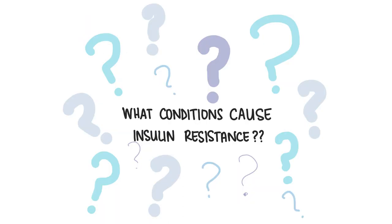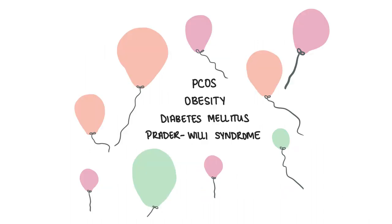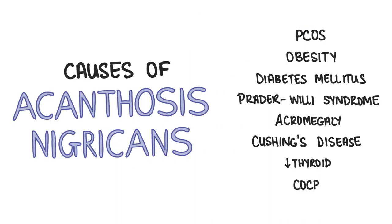Can you think of any conditions that can cause insulin resistance? Some causes of insulin resistance are PCOS, obesity, diabetes mellitus and Prader-Willi syndrome. Other important causes of acanthosis nigricans include acromegaly, Cushing's disease, hypothyroidism, and iatrogenic causes, for example use of the combined oral contraceptive pill.